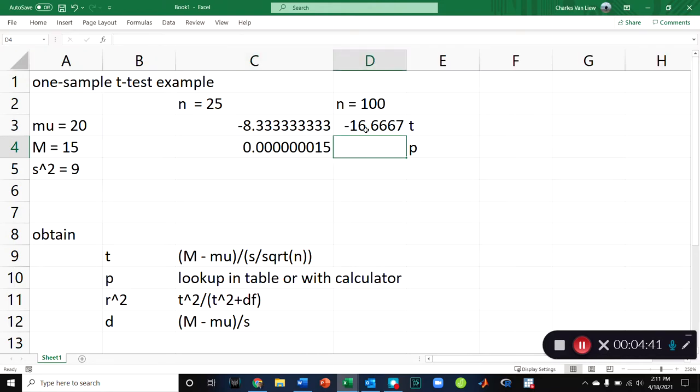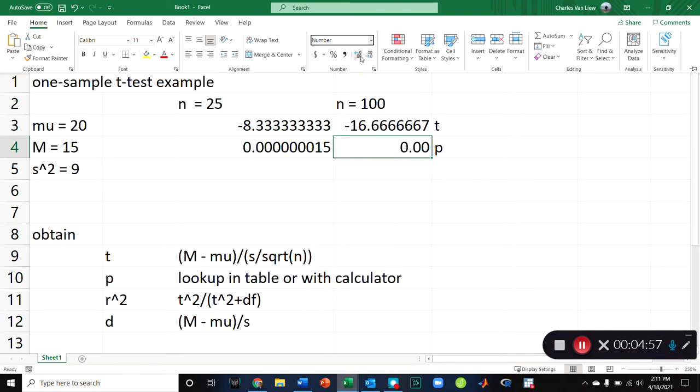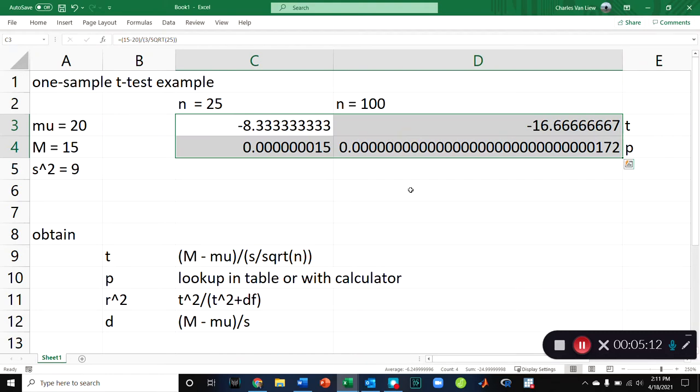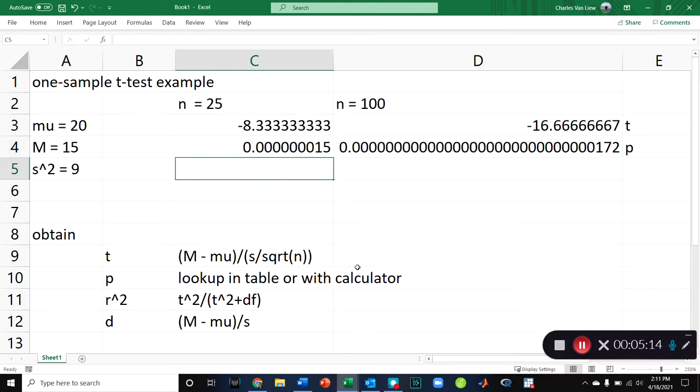Now, this p-value is going to be even smaller, but we can use the same process, t.dist.2-tailed. We need to get the positive form for the two-tailed test. The degrees of freedom are now 99. And we get an even smaller. This is going to go way out if we want to see this in decimal form. So this is infinitesimally unlikely to happen by chance, given the variability we'd expect in this sampling distribution. So both of these results, what we would call statistically significant. We would reject the null hypothesis.